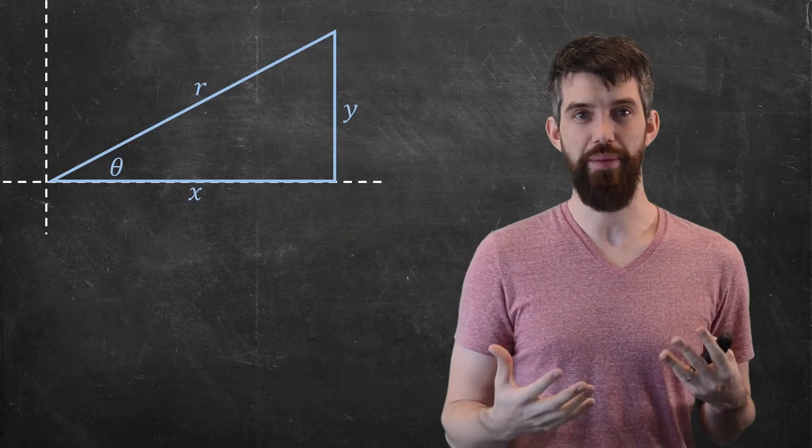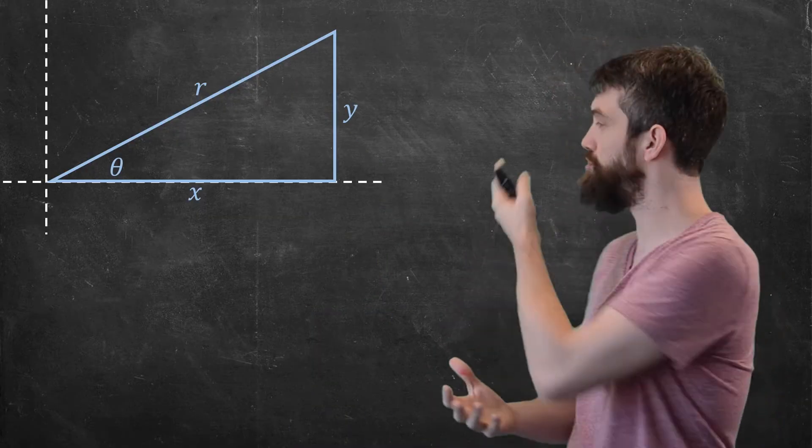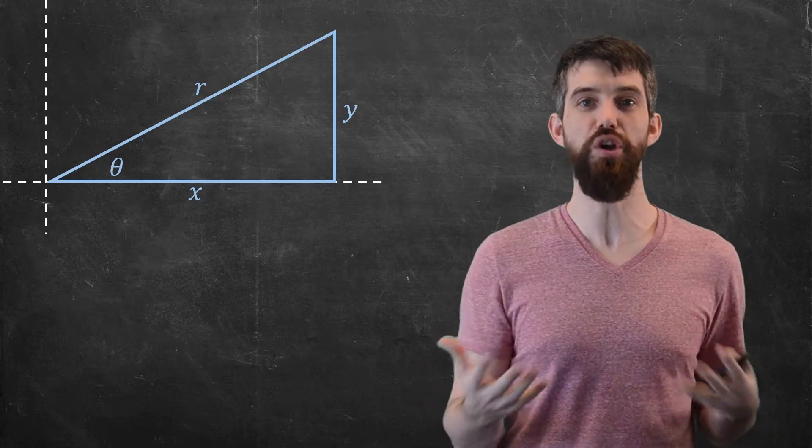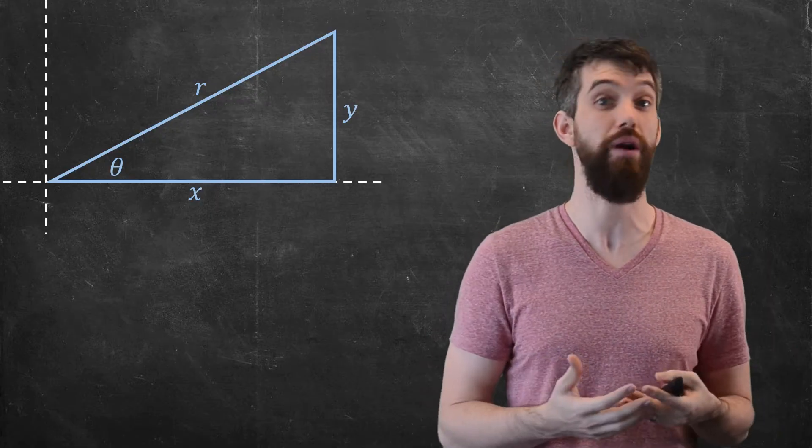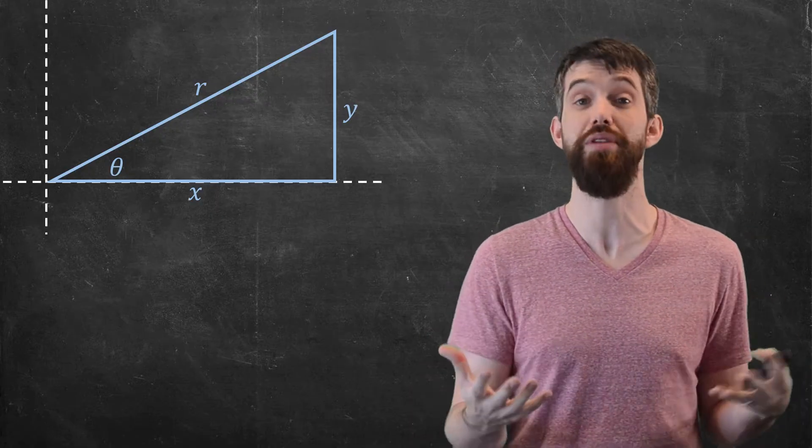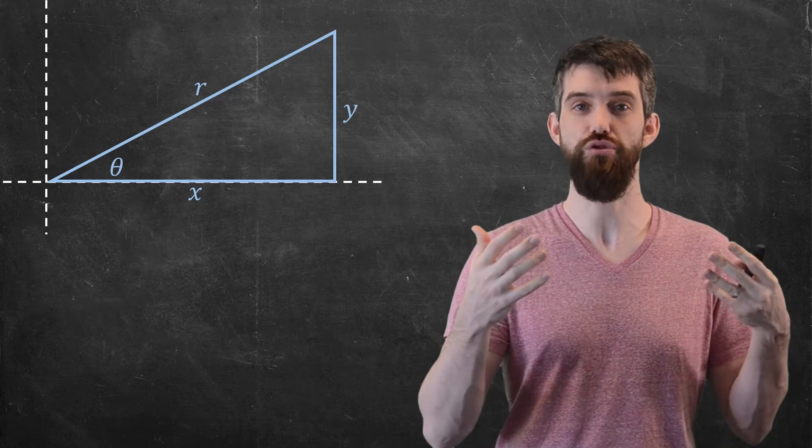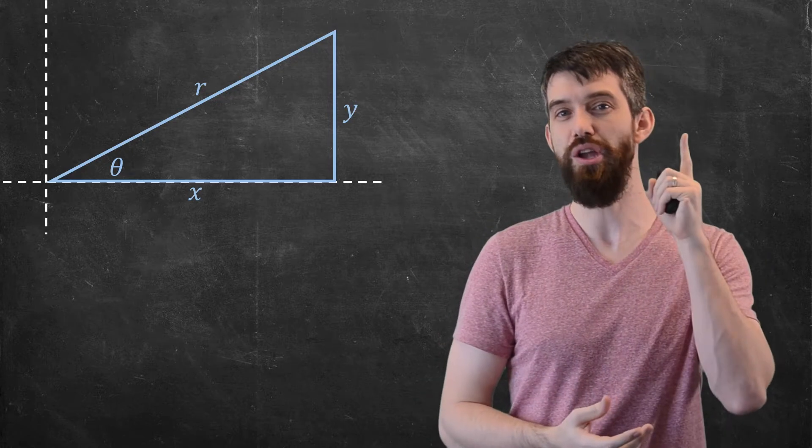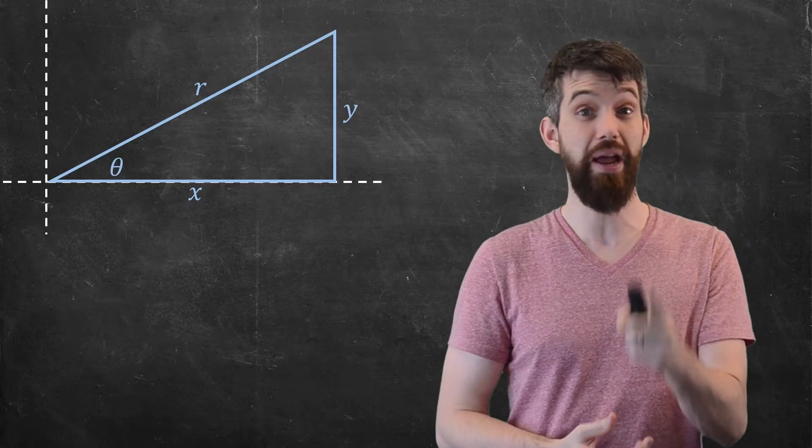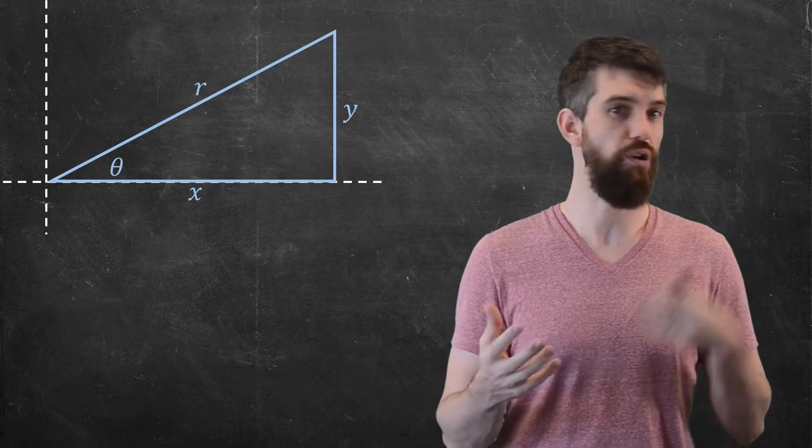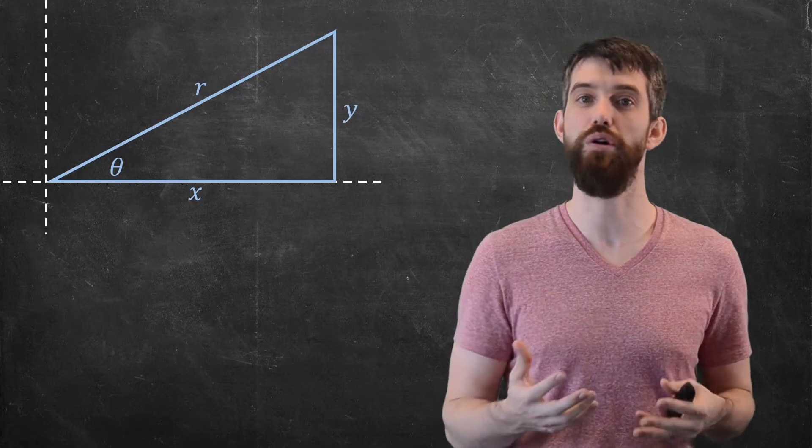Let's generalize this a little bit. I've given a generic triangle here that starts at the origin. It has some angle of theta where it begins on the positive x-axis and rotates up some amount theta in the counterclockwise direction. This forms a triangle where I have a radius of r, that's my hypotenuse, and then there's an x and a y for my horizontal and vertical components.